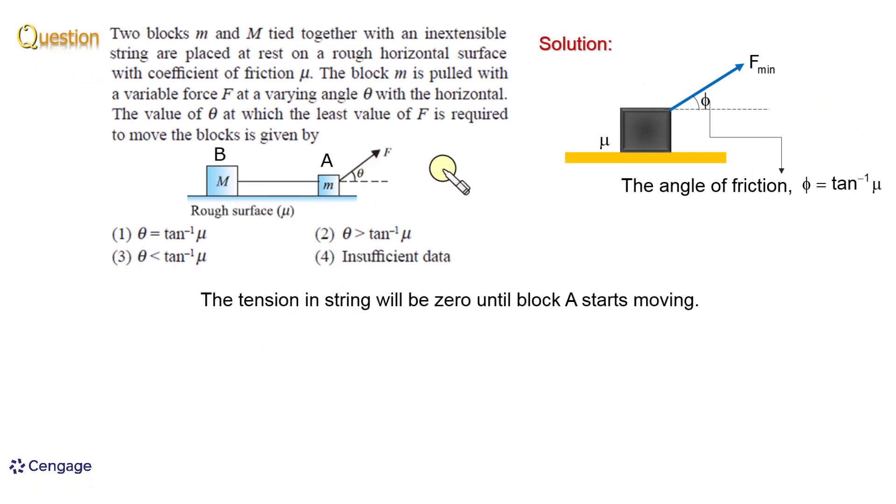For A to move with the least value of the force, this angle θ should be equal to angle of friction. And we know these two blocks are connected together with the light inextensible string. That means when this will move, this will also move. They are connected together, so they will move together always.